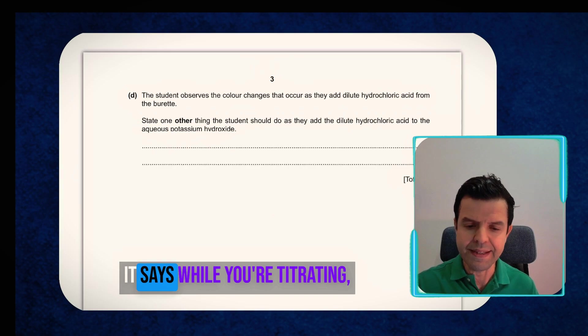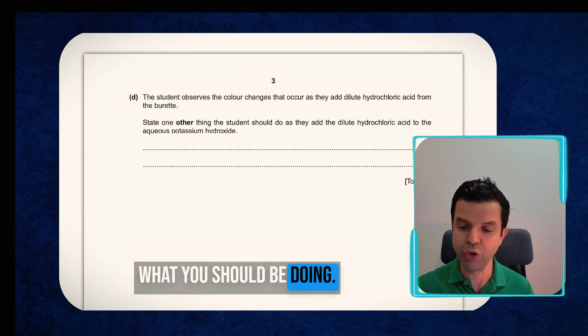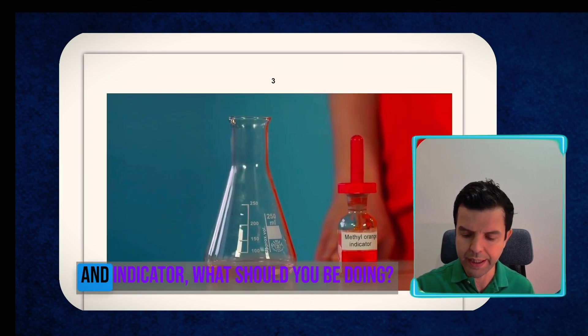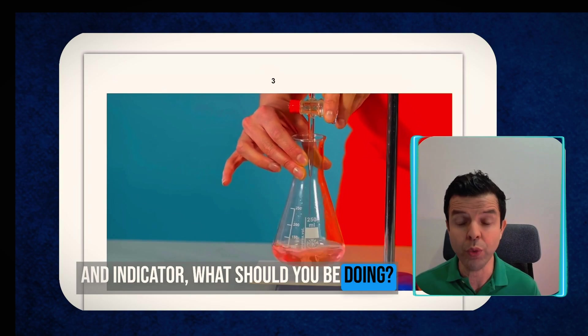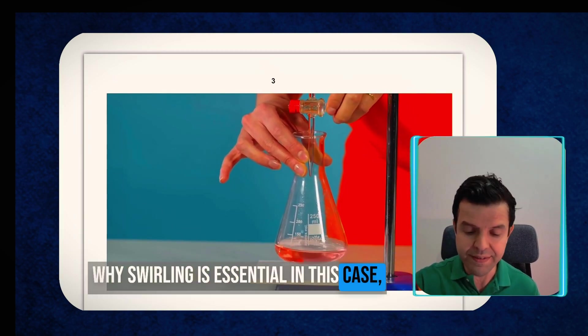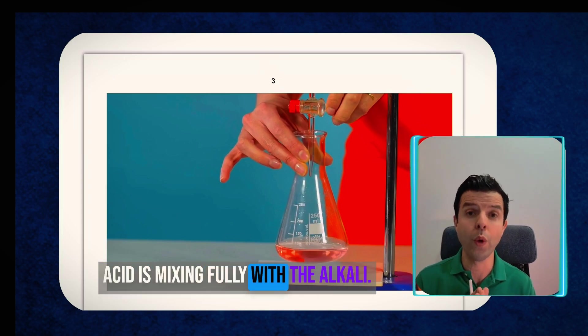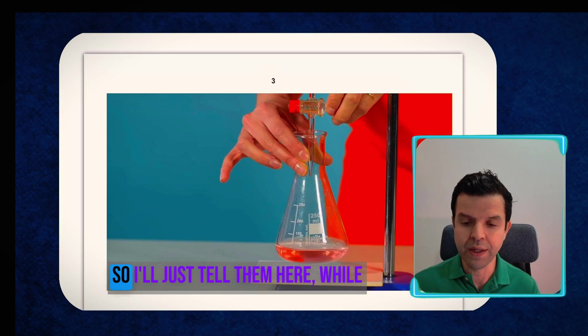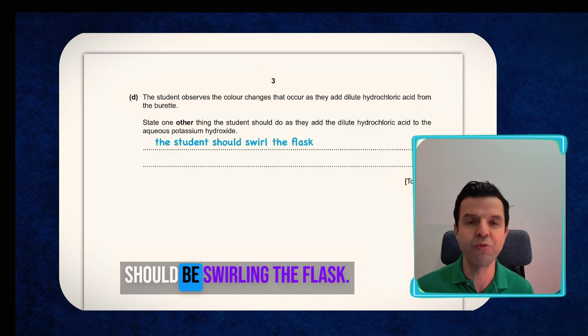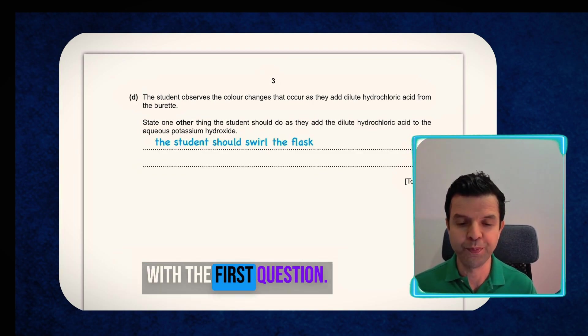Question continues here. It says while you're titrating, what you should be doing. So while you pour in the acid to the alkali and indicator, what should you be doing? Simply, you should be swirling. Why swirling is essential in this case? Because you must ensure that the acid is mixing fully with the alkaline. So I'll just tell them here, while titrating, you should be swirling the flask. This means we're done fully with the first question.